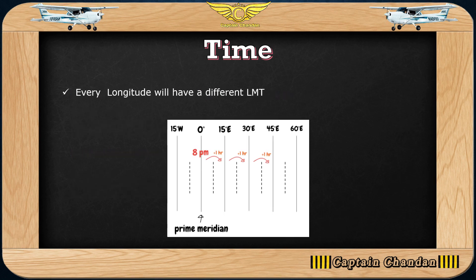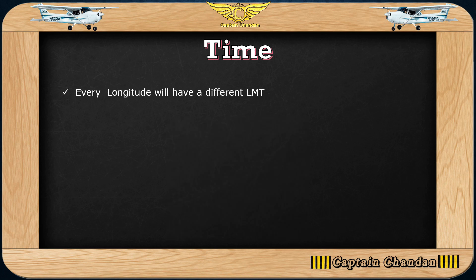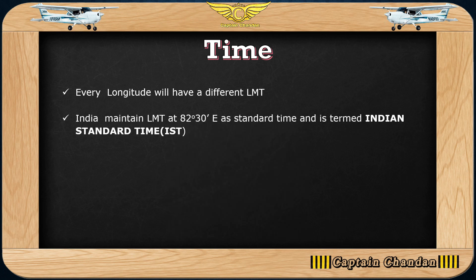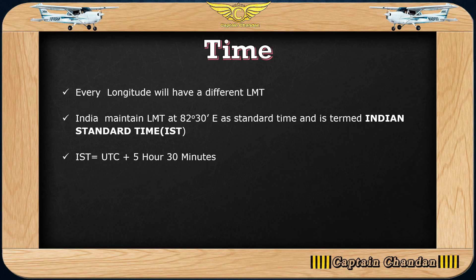Every longitude will have a different LMT, but all longitudes share the same UTC. India maintains LMT at 82 degrees 30 minutes East — that meridian passes through India as its standard time, called Indian Standard Time. IST equals UTC plus 5 hours 30 minutes, because 82°30' divided by 15 equals 5.5 hours. India is east, so local time is greater than UTC.